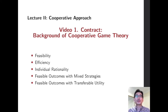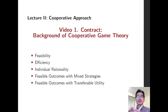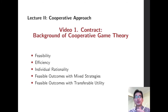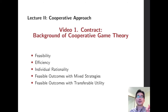In the previous lecture, we studied some basic concepts in non-cooperative game. In this video, we introduce another approach to game, which is so-called cooperative game theory. We will discuss some basic properties in allocation problems: feasibility, efficiency, and individual rationality.